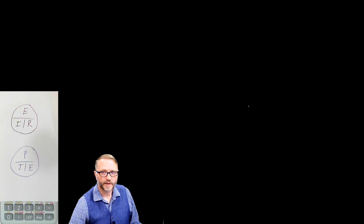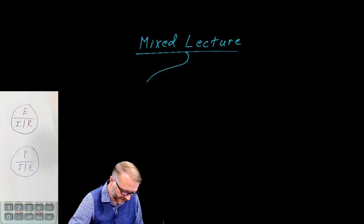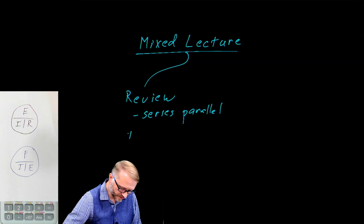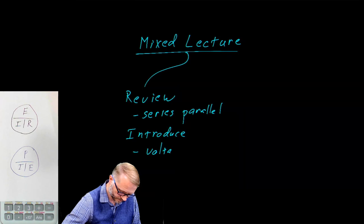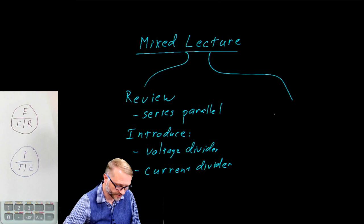Welcome back folks. This is lecture number five in our exploration of industrial electricity. Today's lecture is a bit of a mixed lecture. We are going to review series-parallel, then introduce the voltage divider and current divider, and we're also going to explore magnetics.